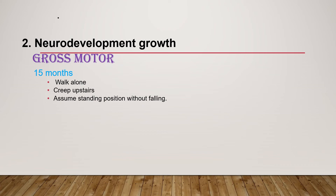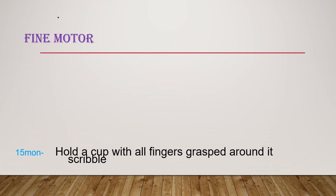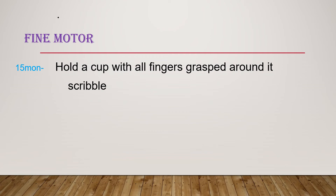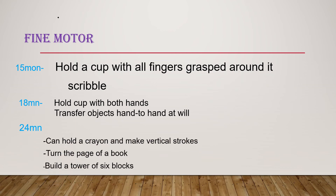Neurodevelopmental milestones for toddlers: at 15 months, they walk alone, creep upstairs, and assume a standing position without falling. At 18 months, they run stiffly and walk upstairs with one hand held. At 24 months, they run well, walk up and down steps one step at a time, and jump. Fine motor: at 15 months, they grasp a cup with all fingers and scribble well. At 18 months, they hold a cup with both hands. At 24 months, they can make vertical strokes, turn pages of a book, and build a tower of six blocks.